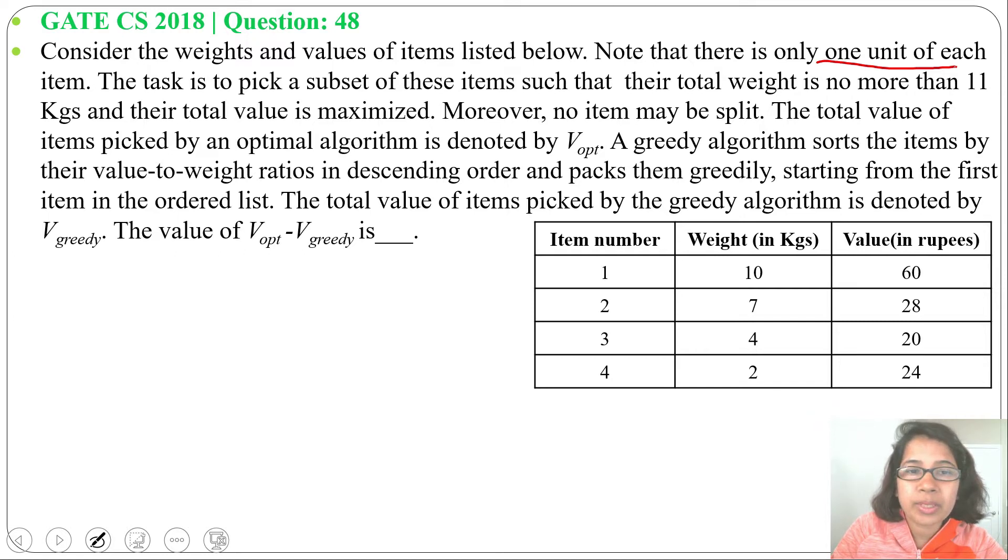The task is to pick a subset of these items such that the total weight is no more than 11 kgs. So total capacity is 11 kg and their total value is maximized. Moreover, no item may be split. No fraction - we can either pick the whole or we can skip. This means it's a 0-1 Knapsack problem.